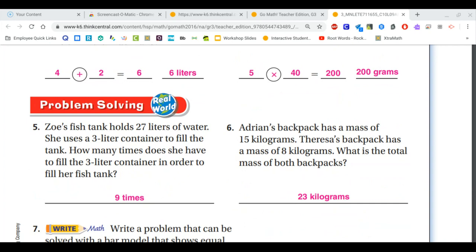For number five, we know that when it says how many times does she have to fill the three liter container in order to fill her fish tank, and we know how big her fish tank is, we need to divide. So 27 divided by three equals nine.